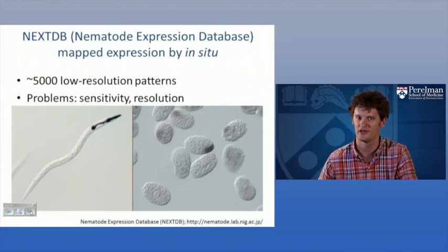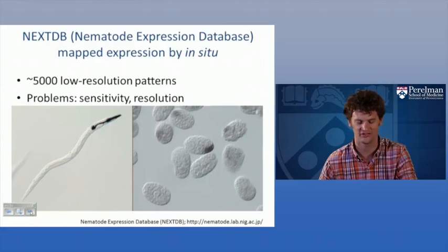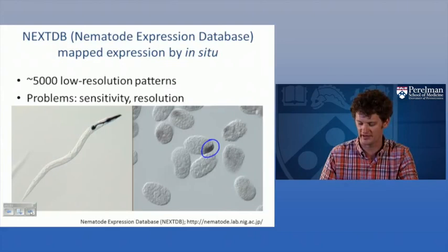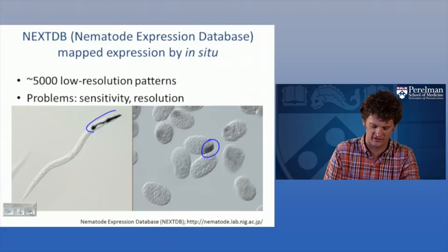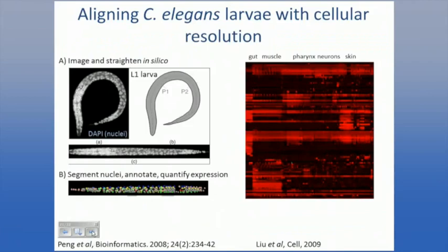Switching to methods used in worms — these are some early in situ pictures. One advantage of worms is their invariant anatomy and lineage. But one disadvantage for this kind of project is they're really small, and the in situ hybridization images using traditional enzymatic labeling approaches are fundamentally limited. You can tell if you're an expert that particular expression is in the pharynx, but for many embryonic patterns you can't even tell where one cell ends and the next cell begins.